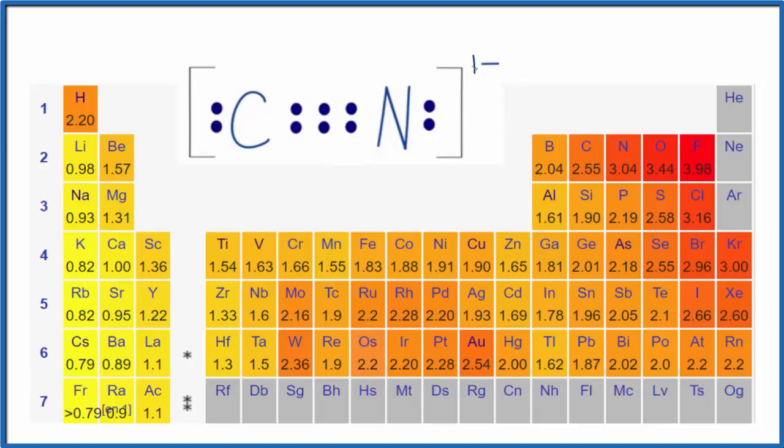This is a 1 minus ionic charge. What the 1 minus means is that we have an extra electron for the structure. So it has a negative charge. And you can think about that electron kind of spread out over the whole ion.